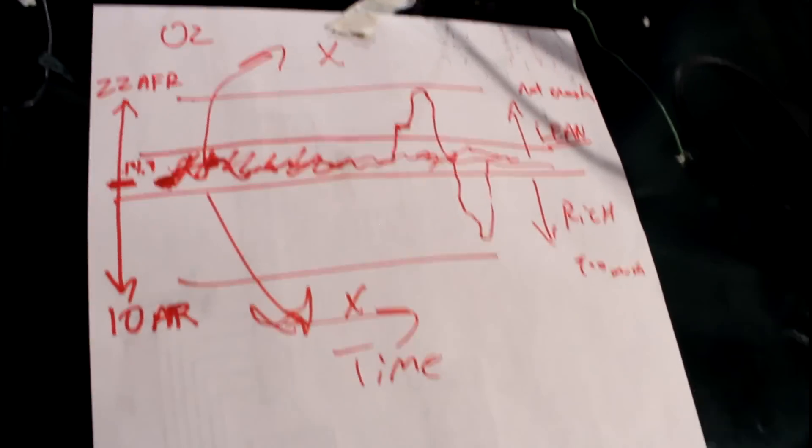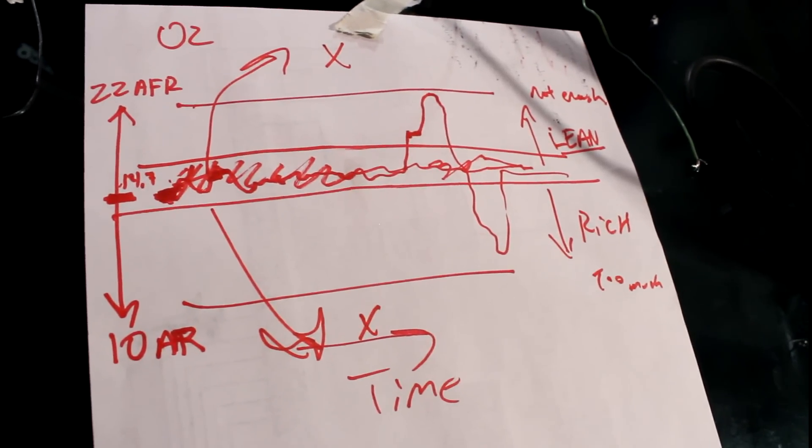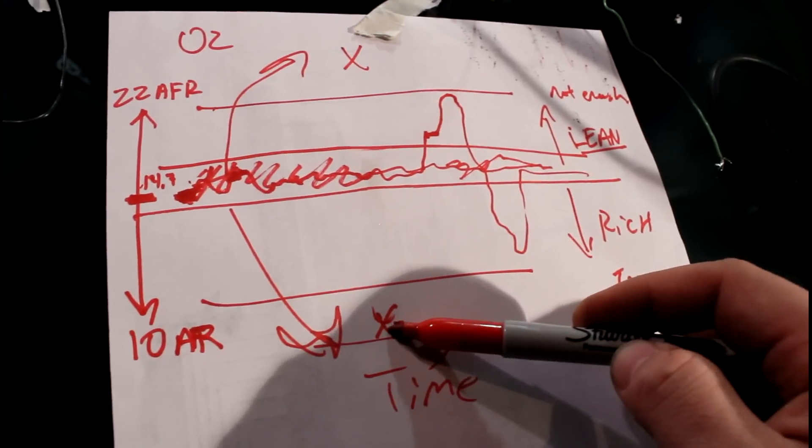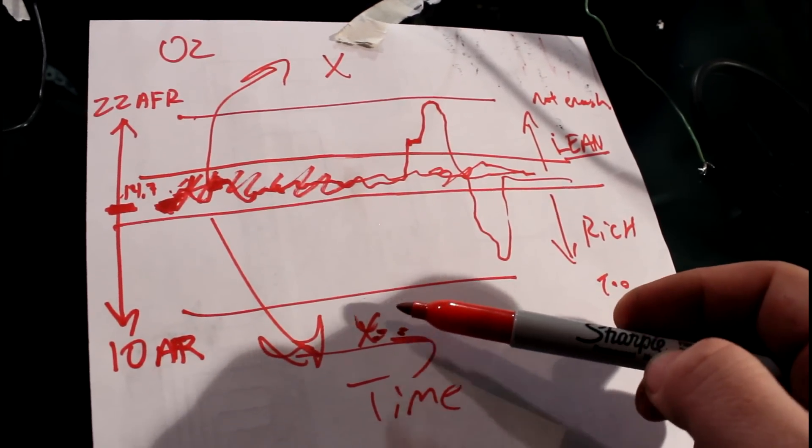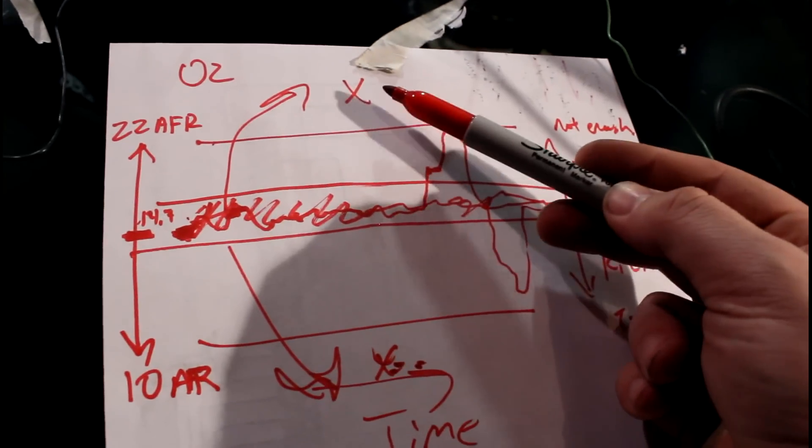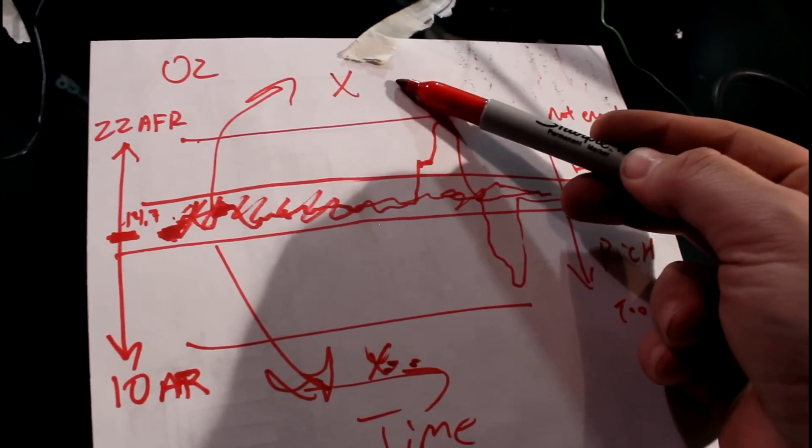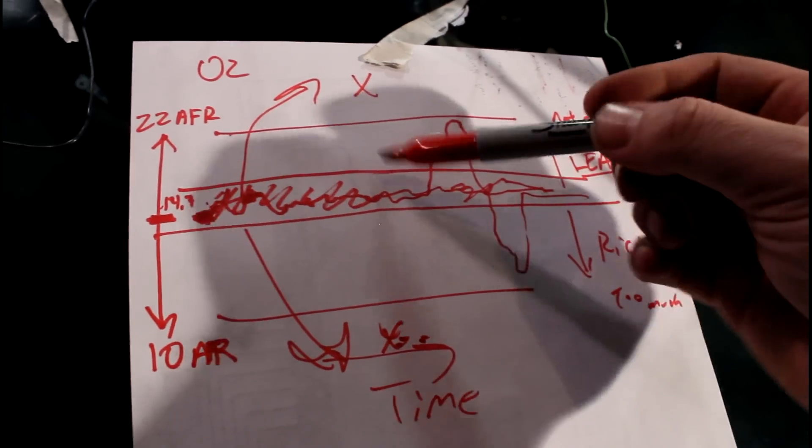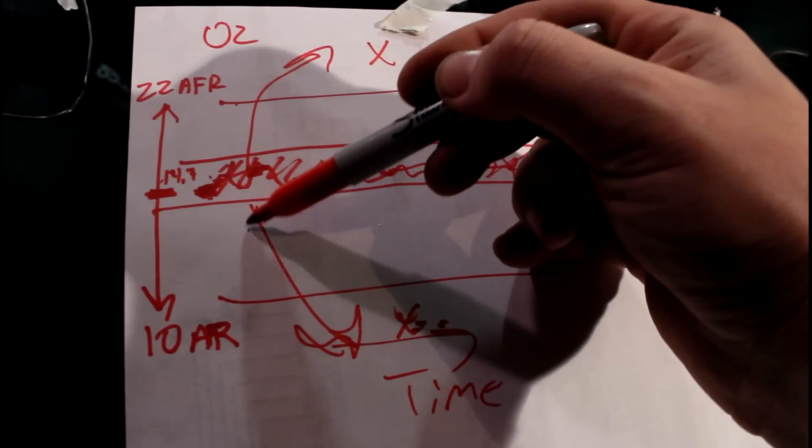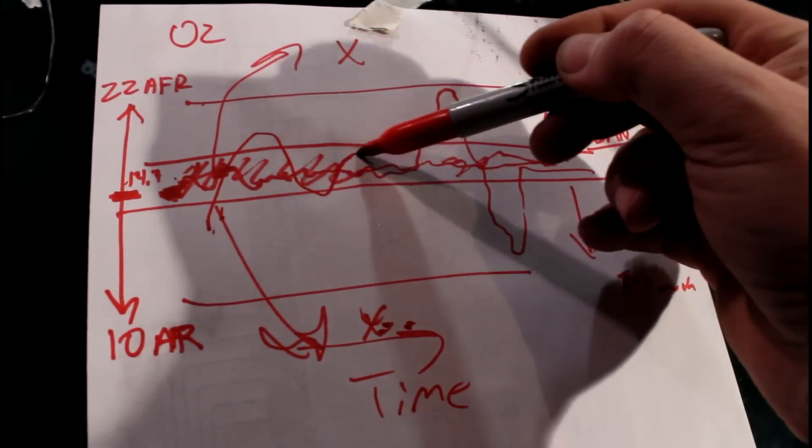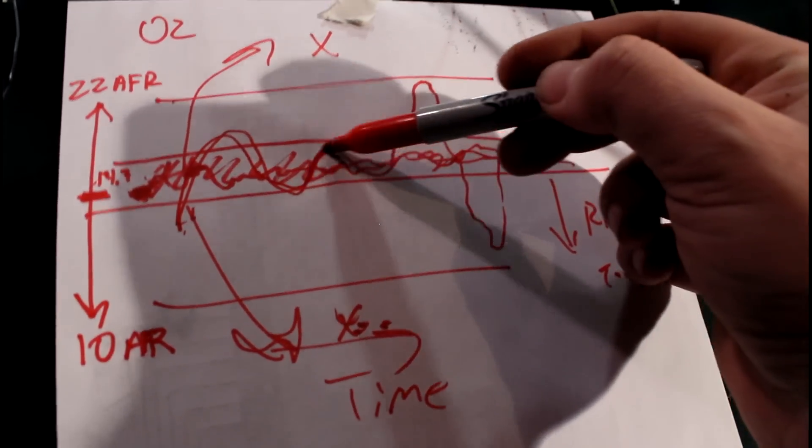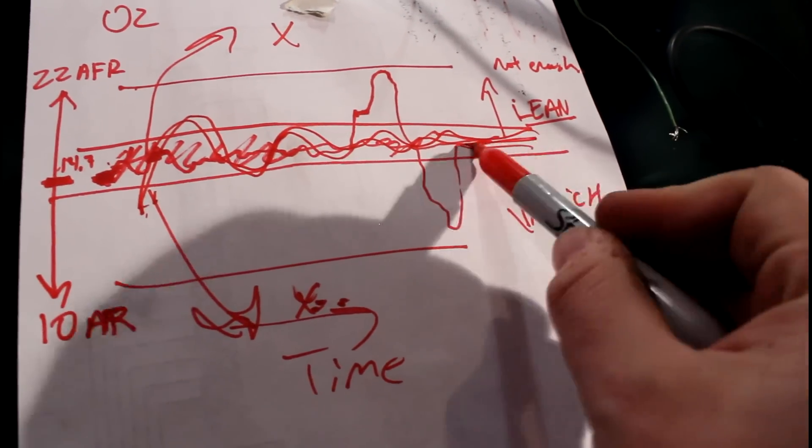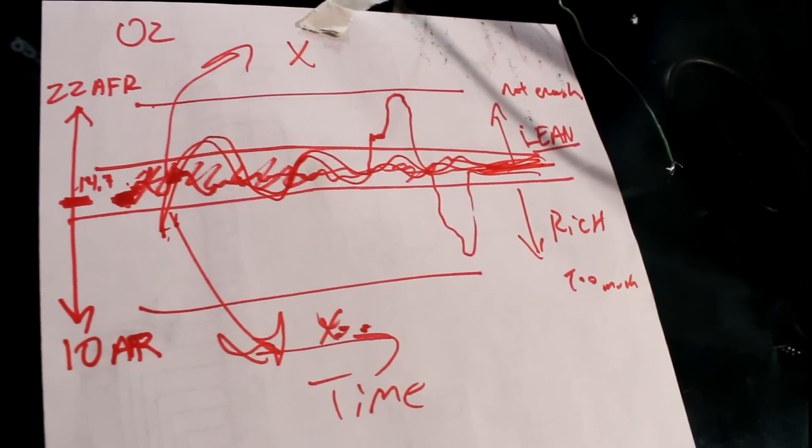So what the ECUs do, the stock ones, basically if you come down here and it's reporting that you're rich, it will lean out the mixture until you swing back around to lean. If you're lean it's going to swing it back around. And so as it's changing that you'll end up with sort of a curve that looks like this. And ideally it's going to center around 14.7. And they do a pretty good job of that.